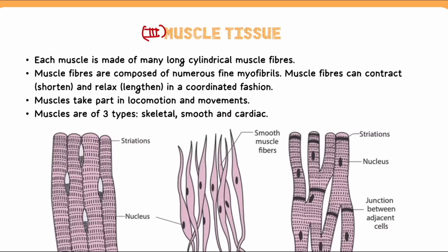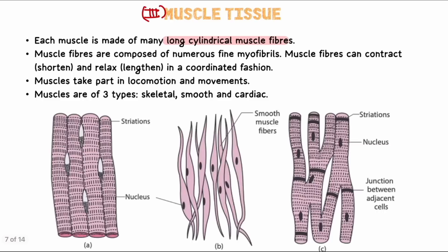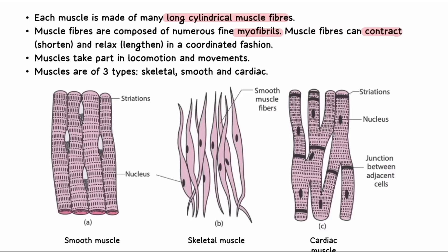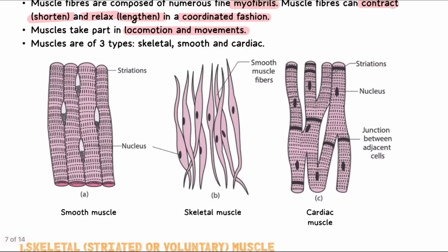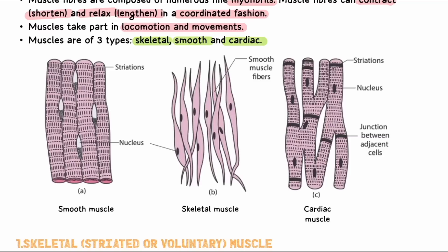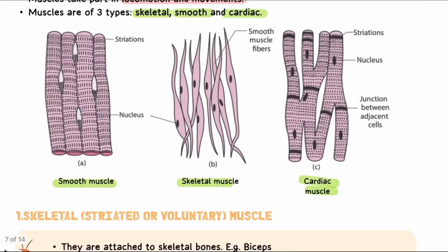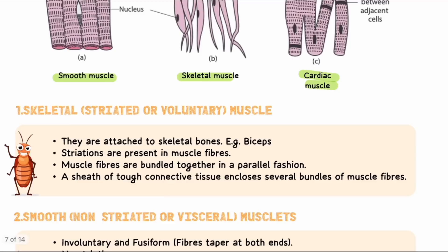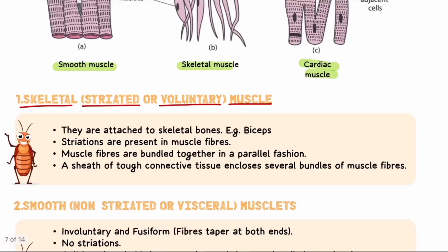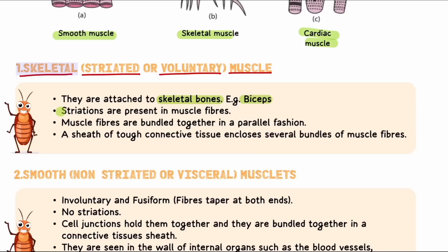The third tissue type is muscular tissue. Muscle tissue is made of long cylindrical fibers containing many myofibrils that can contract and relax. When they contract they shorten; when they relax they lengthen. This coordinated action creates movement and locomotion. There are three types of muscles: skeletal muscles, smooth muscles, and cardiac muscles. Skeletal muscles are striated and voluntary, attached to skeletal bones (e.g., biceps). They are bundled in parallel fashion and are multi-nucleated and not branched.